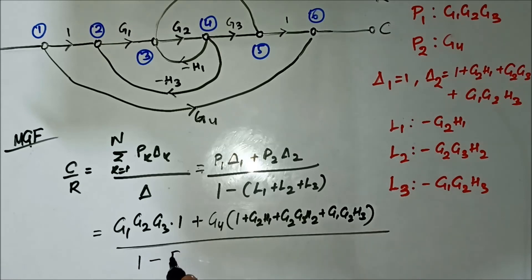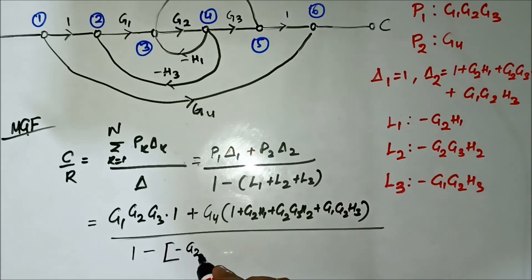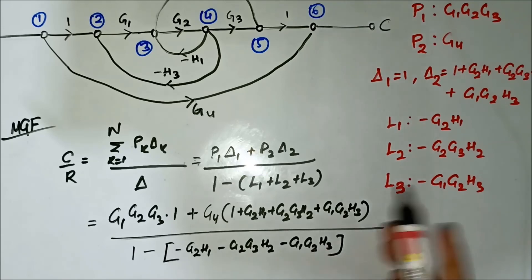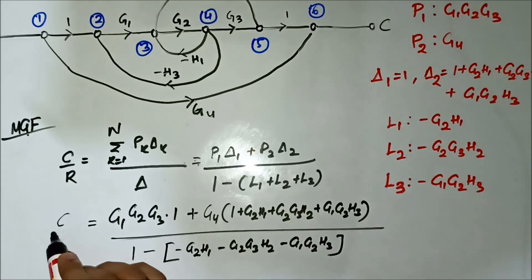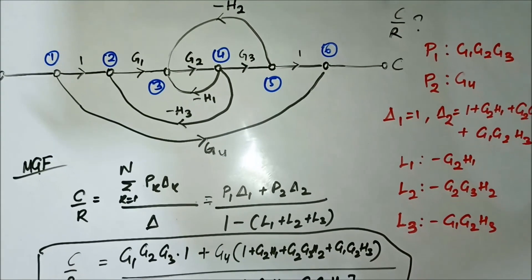Divided by 1 minus sum of the individual loop gains, that is minus (−g2h1) minus (−g2·g3·h2) minus (−g1·g2·h3). So when we open the bracket, it will all become plus. So this is the transfer function for this signal flow graph.